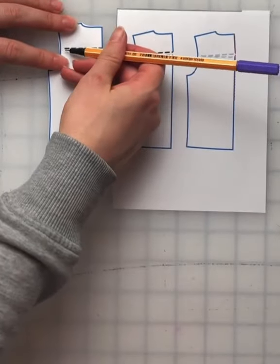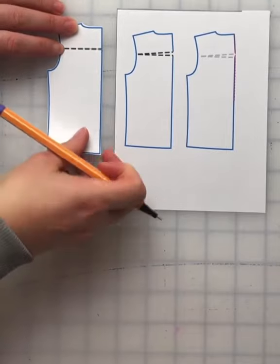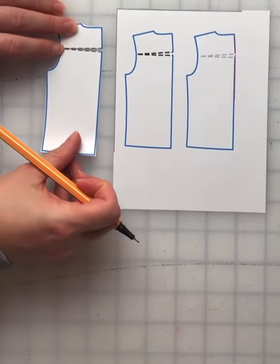You're going to cut across here, stopping just before you get to the armhole. You're going to slash your pattern open that amount.